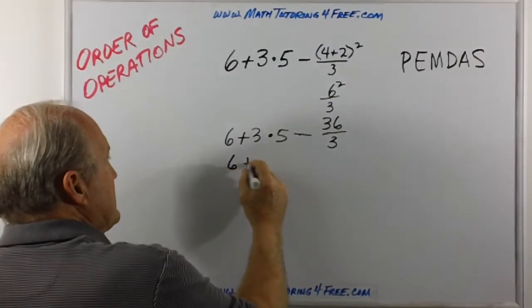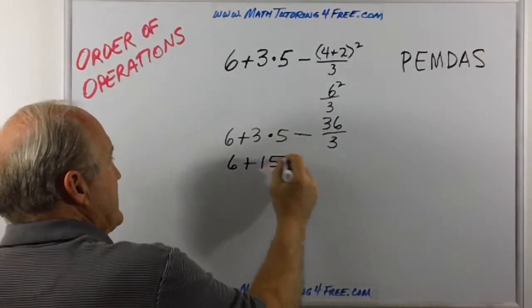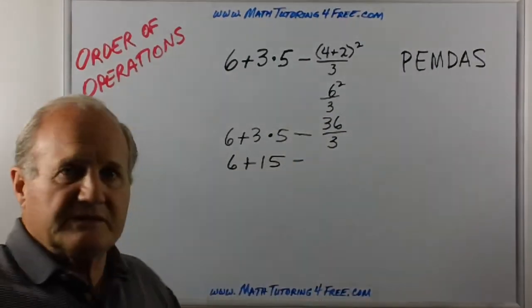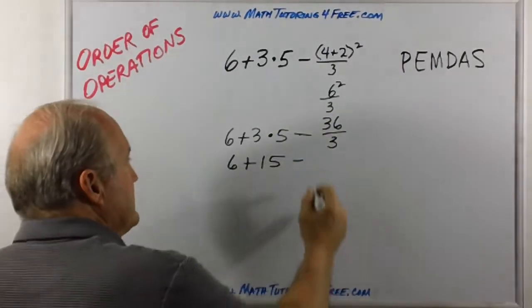Six plus three times five is 15 minus, and we can do our division: 36 divided by three is 12.